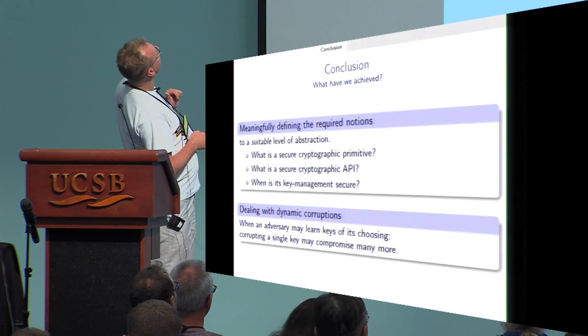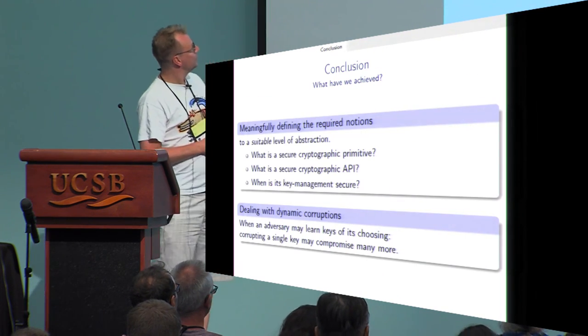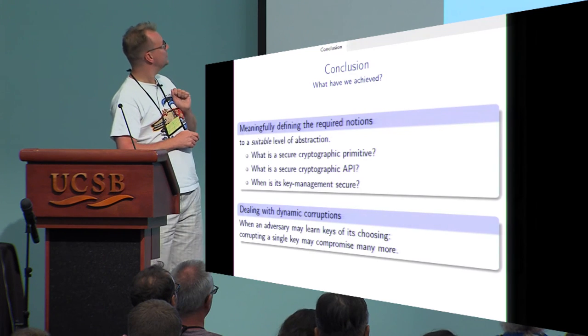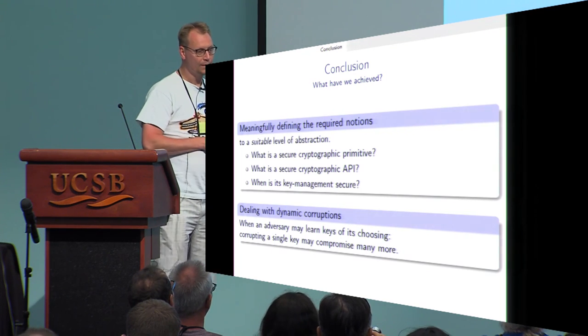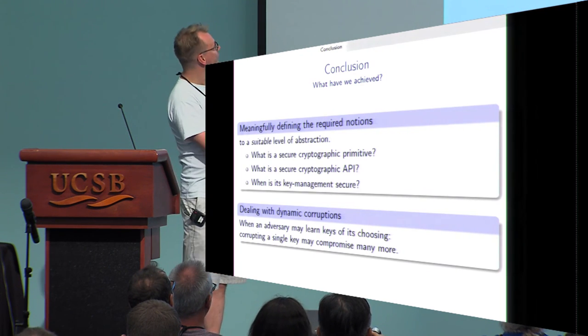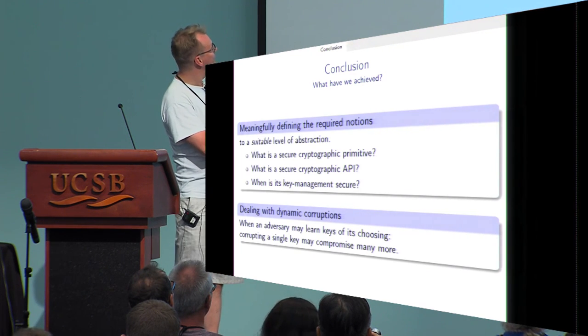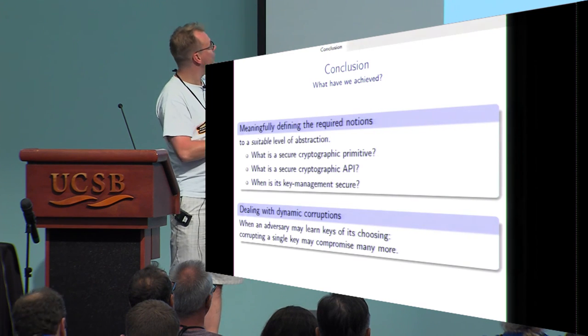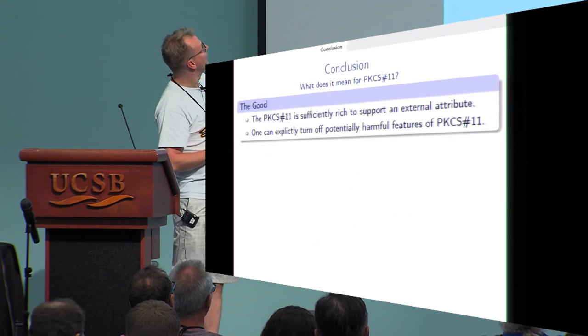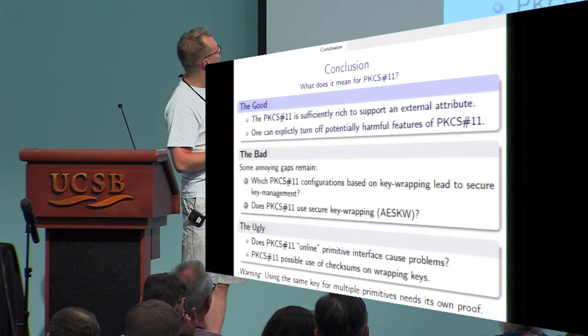So we've achieved a suitable level of abstraction for a secure cryptographic primitive, and we can deal with all the challenges described.